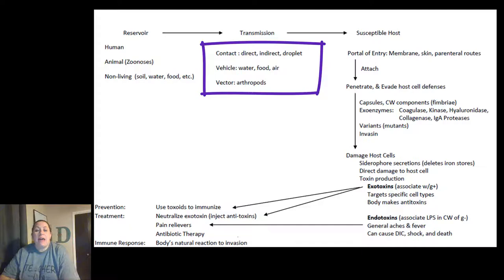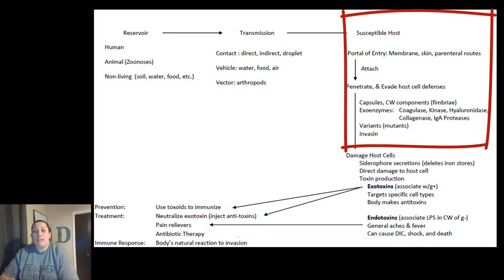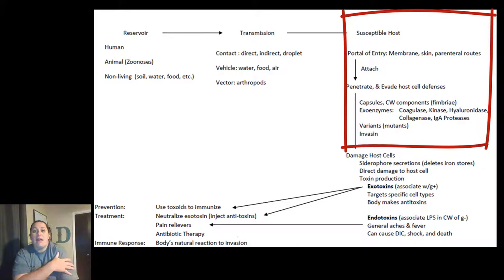Vectors carry diseases that pass from one human to the next, or from an animal to a human, based on bites. The host then needs to be susceptible to getting sick. There has to be a portal of entry — through mucous membranes, through the skin, or parenteral routes like a needle puncturing deeper into the muscle. They have to be able to gain access into your body and get through the first lines of defense.